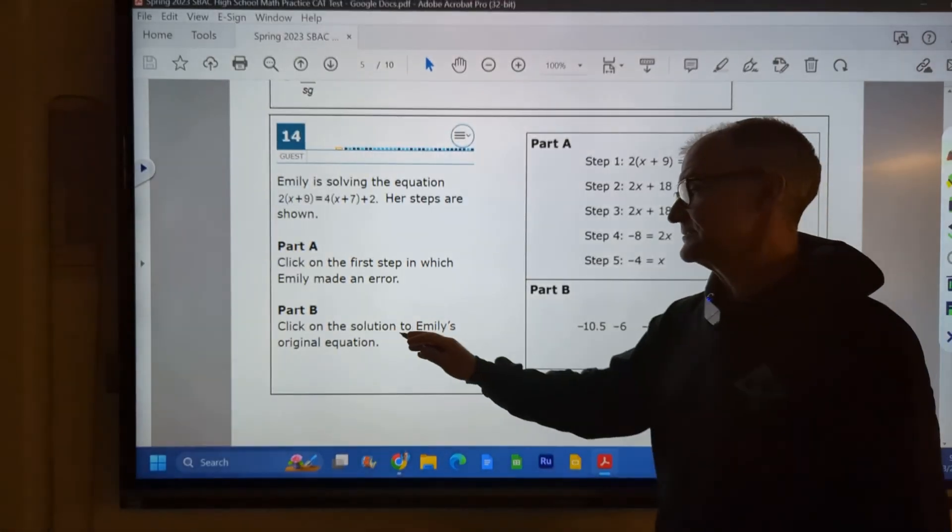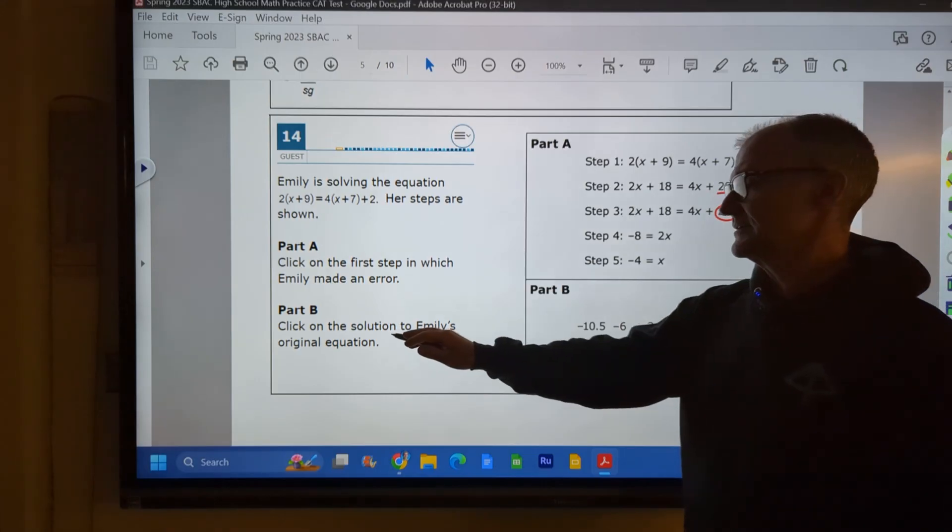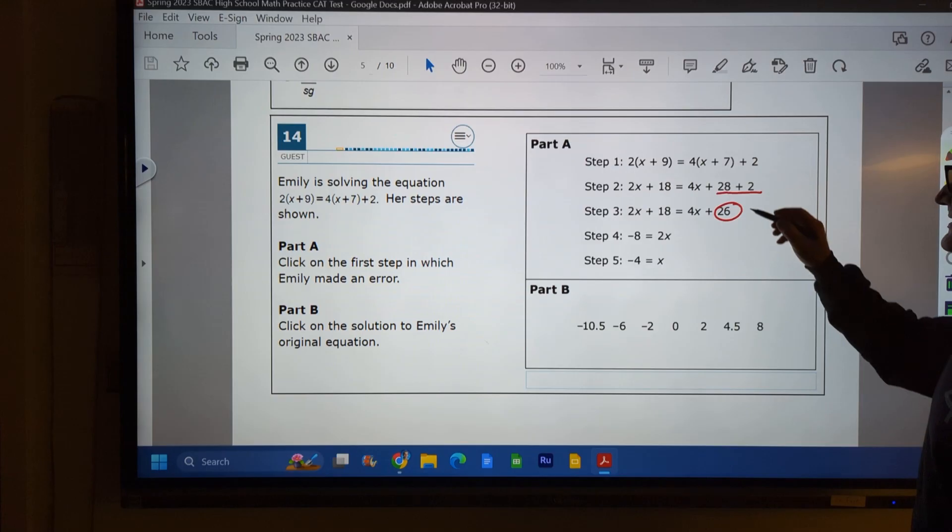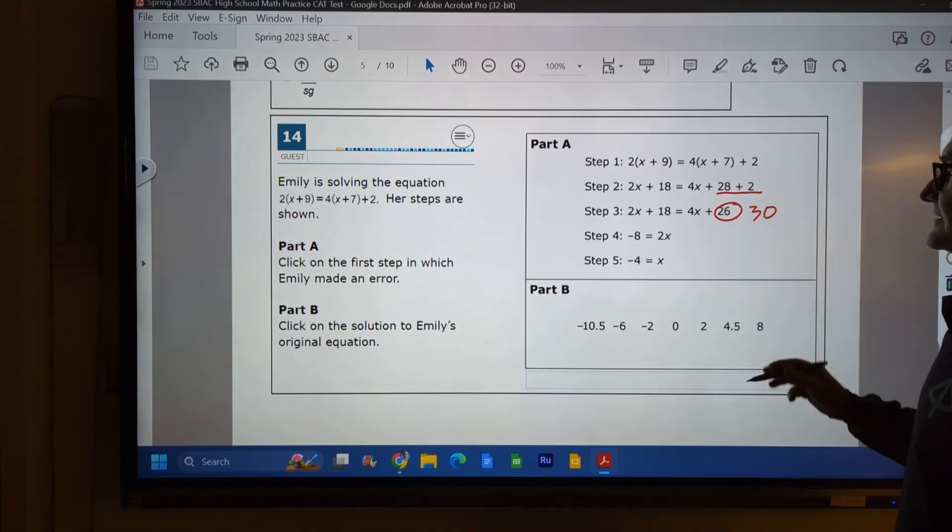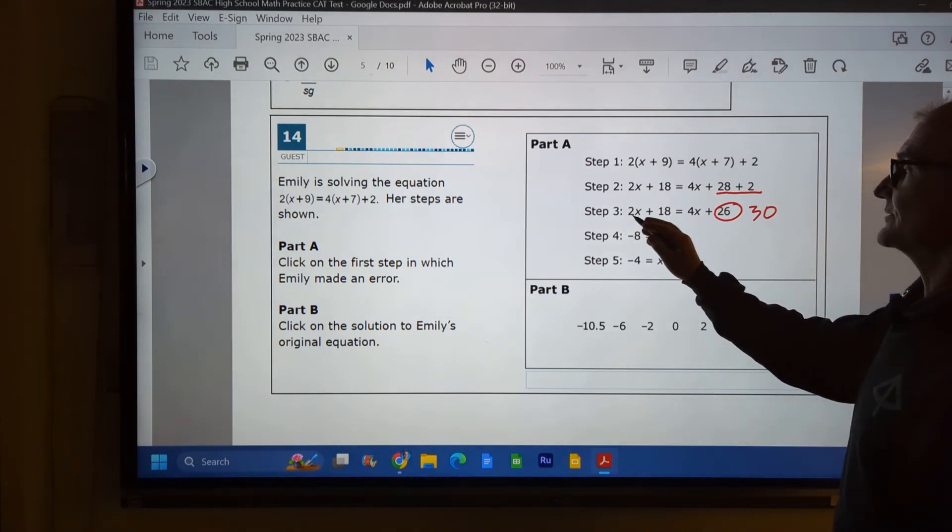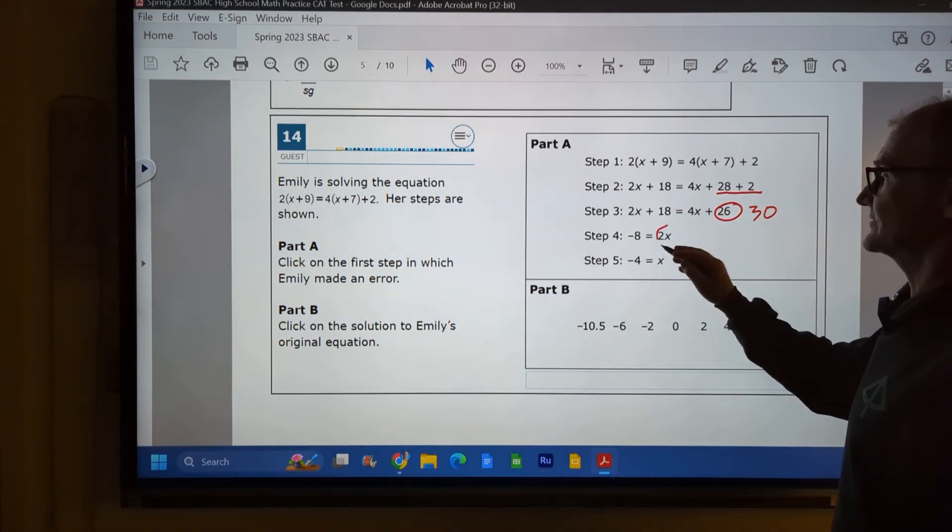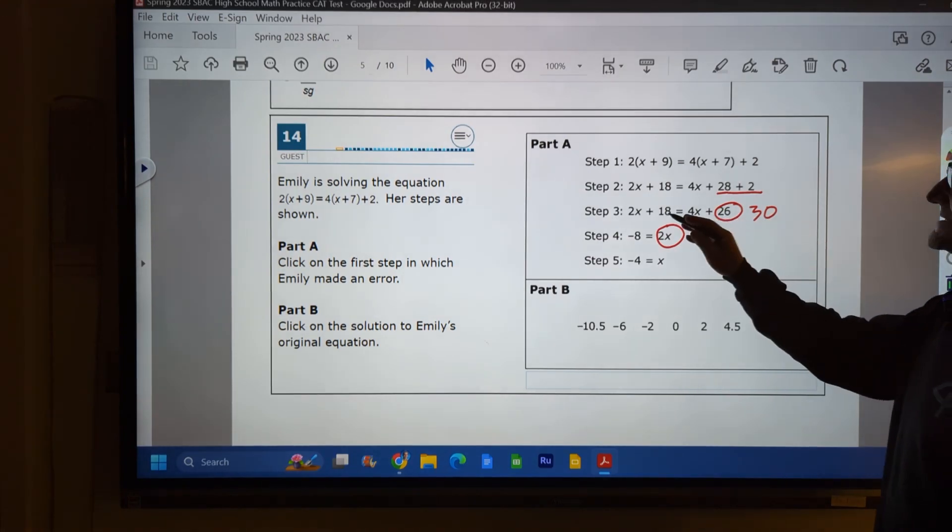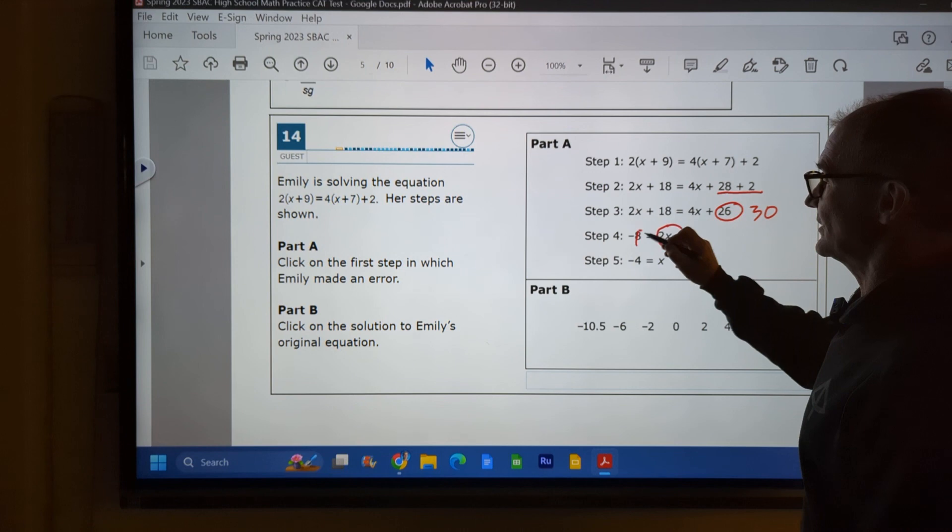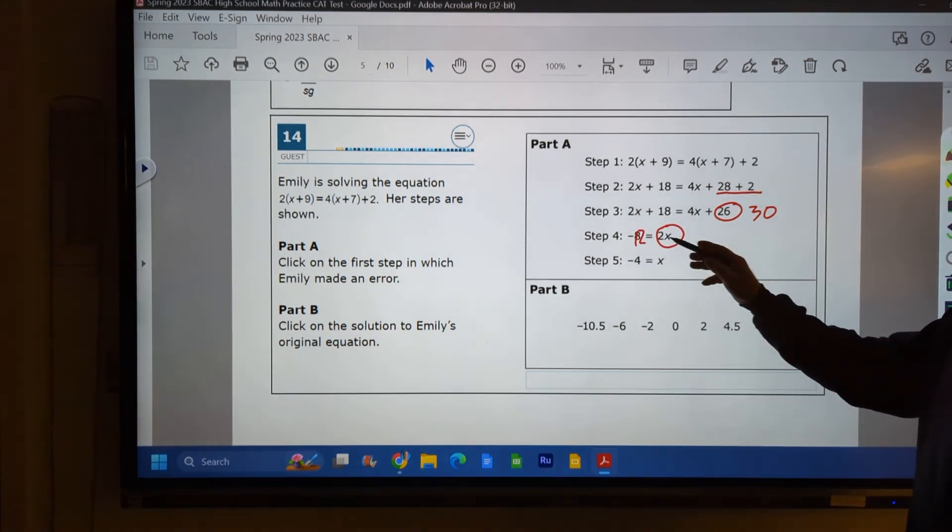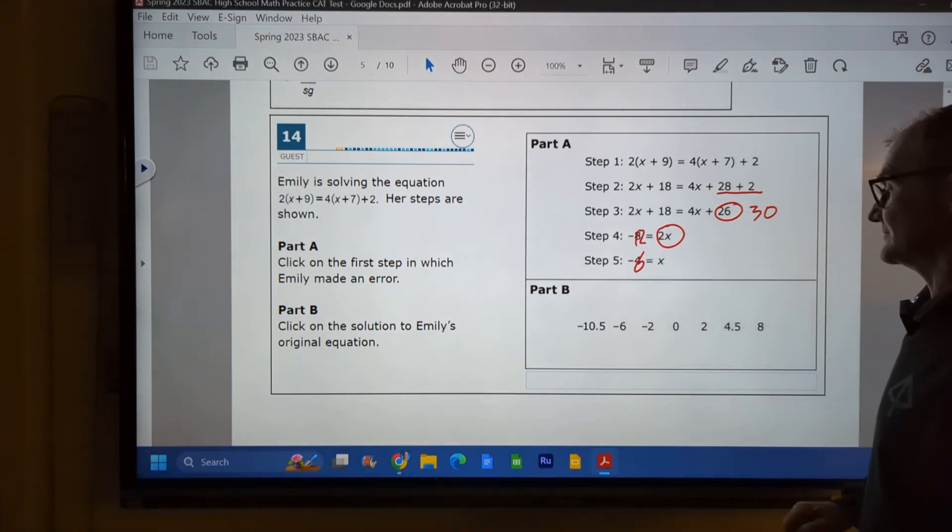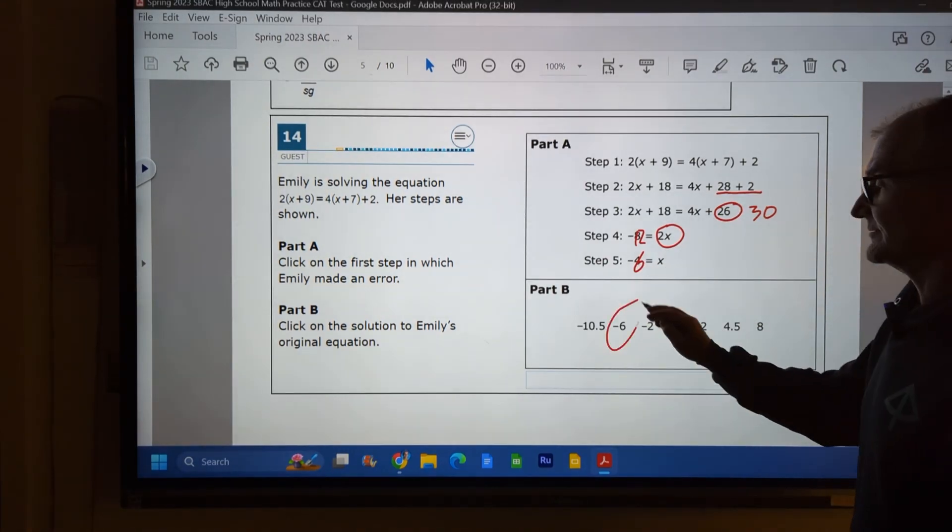Part B, click on the solution to Emily's original equation. So I think what that means is solve this correctly. So instead of this being 26, it should be a 30. Then I'm gonna get my terms together. I'll subtract 2x from both sides to get 2x over here. And then I'm gonna subtract 30 from both sides. 18 minus that 30 is negative 12. 2x is equal to negative 12. Divide both sides by 2. And x is equal to negative 6. There's my correct answer there.